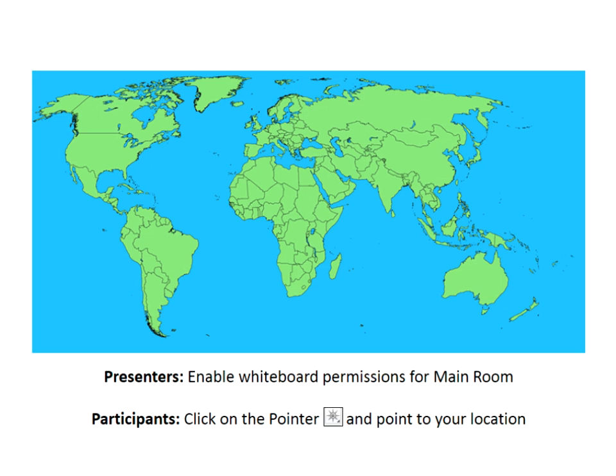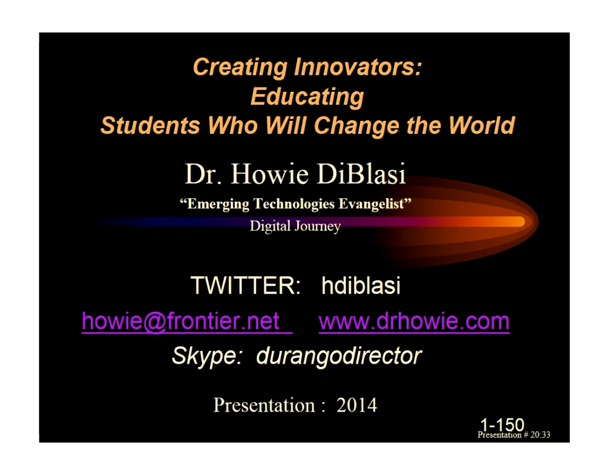There are some of you in the live audience. To indicate where you're participating from, look to the left of the map. The star icon is the second one down — click on it twice and then click on the map to indicate your location, or put a note in the chat. If you're listening to the recording, thank you for taking the time to do so.